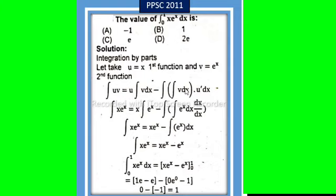By putting the values of first and second function, integral of x e^x dx equals x times integral of e^x dx minus integral of derivative of x times e^x dx. Integration of e^x is e^x.